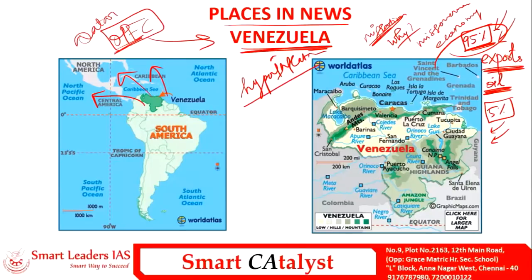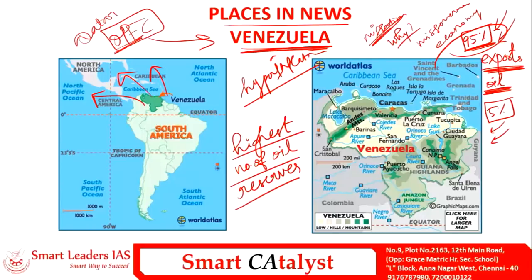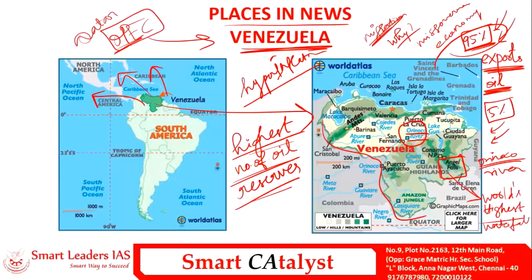One interesting point is that Venezuela is the country with the highest number of oil reserves. Inside Venezuela, there are some important geographical features: the River Orinoco, which is the second-largest river in South America after the Amazon; Lake Maracaibo, which is South America's largest lake; and the Andes mountain, which is the largest mountain in South America, also passes through Venezuela.